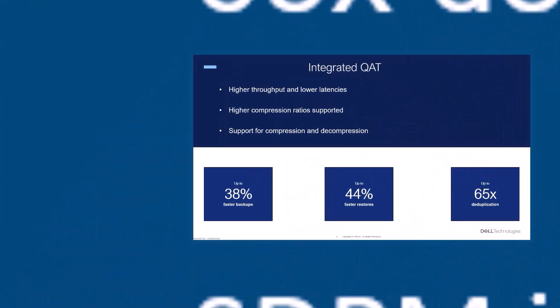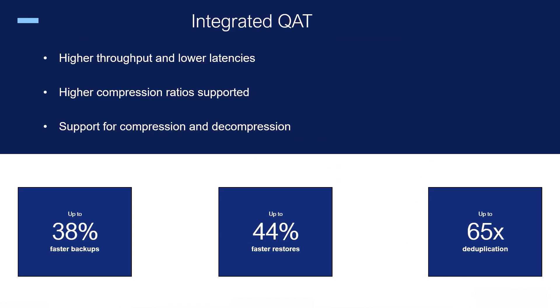Let's see more about the integrated QAT and the value it adds. PowerProtect Data Domain series uses hardware-assisted technology with integrated QAT that delivers higher compression with higher performance. On DD-9410 and DD-9910, the hardware accelerator is integrated into the CPU. The accelerator allows the DDOS to offload compression and decompression processes to the hardware accelerator and free up CPU resources, improving appliance performance by providing faster backups, restores, and up to 65x deduplication.